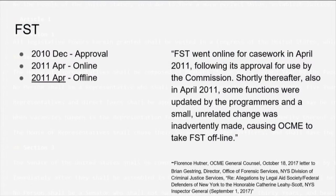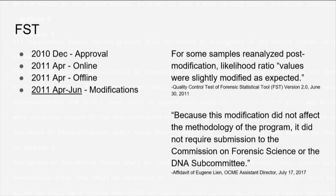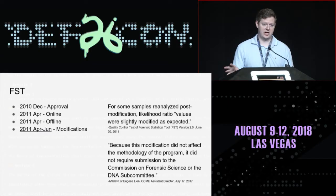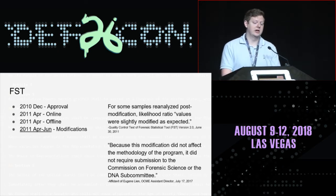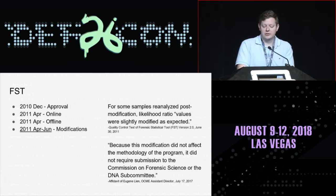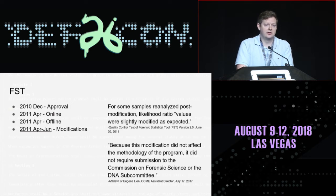That same month they brought it online in 2011, they modified their production version and had to take it offline. OCME made a big one — modifying their live version of the software and taking it offline. Documentation through freedom of information requests suggests this happened either the first or second week it was being used on casework in sexual assault and homicide investigations. We were only told it was taken offline last fall — it went seven years without us knowing they had messed up. They fixed the problem but also made additional modifications. It was later claimed these modifications didn't affect the underlying methodology, but they didn't tell us that until 2017 because nobody knew it had happened in the first place.